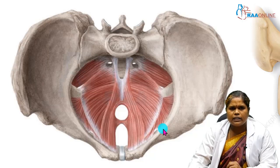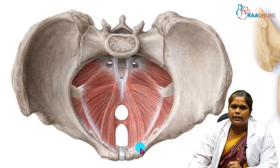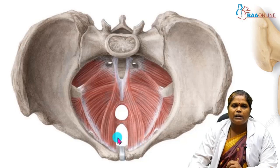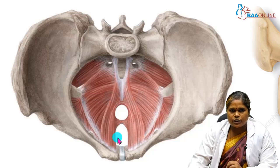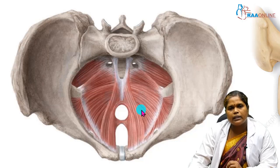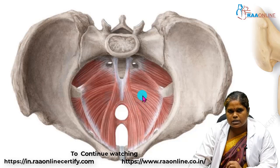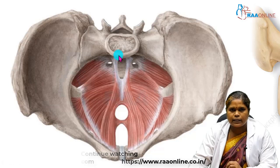These structures bound the pelvic inlet, and what you see here will be the pelvic outlet. Between the pelvic inlet and pelvic outlet we will have the pelvic organs. Here you see a gutter-like muscular structure — this is the pelvic diaphragm, which is formed by the levator ani muscle. Anteriorly you have the pubis and posteriorly the sacrum.